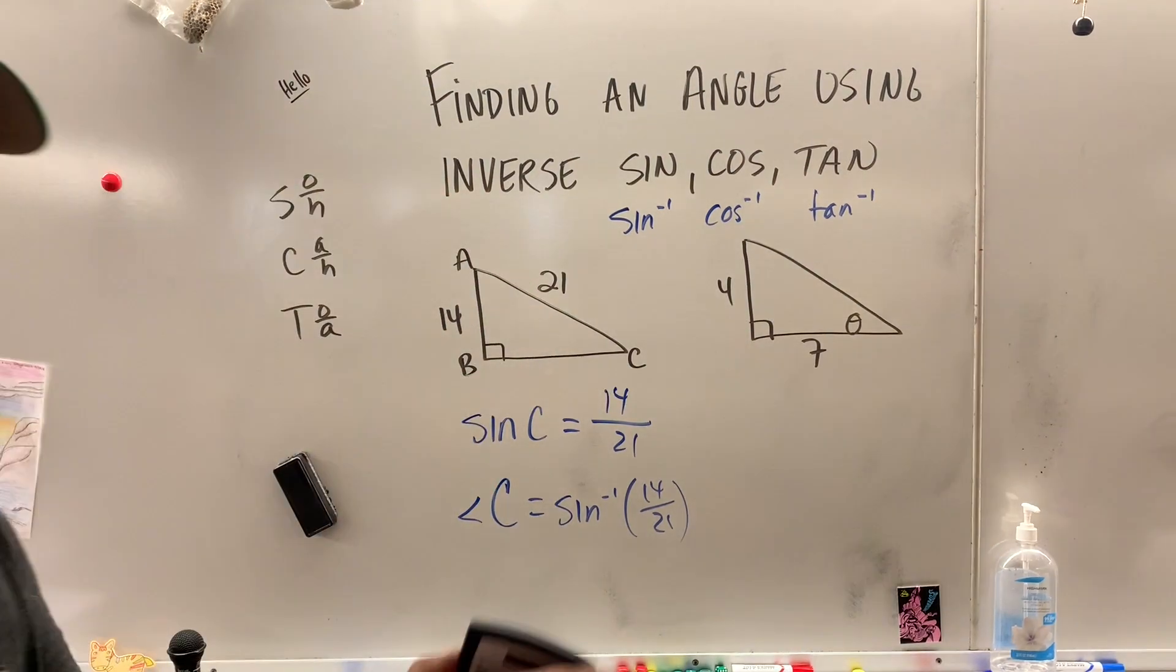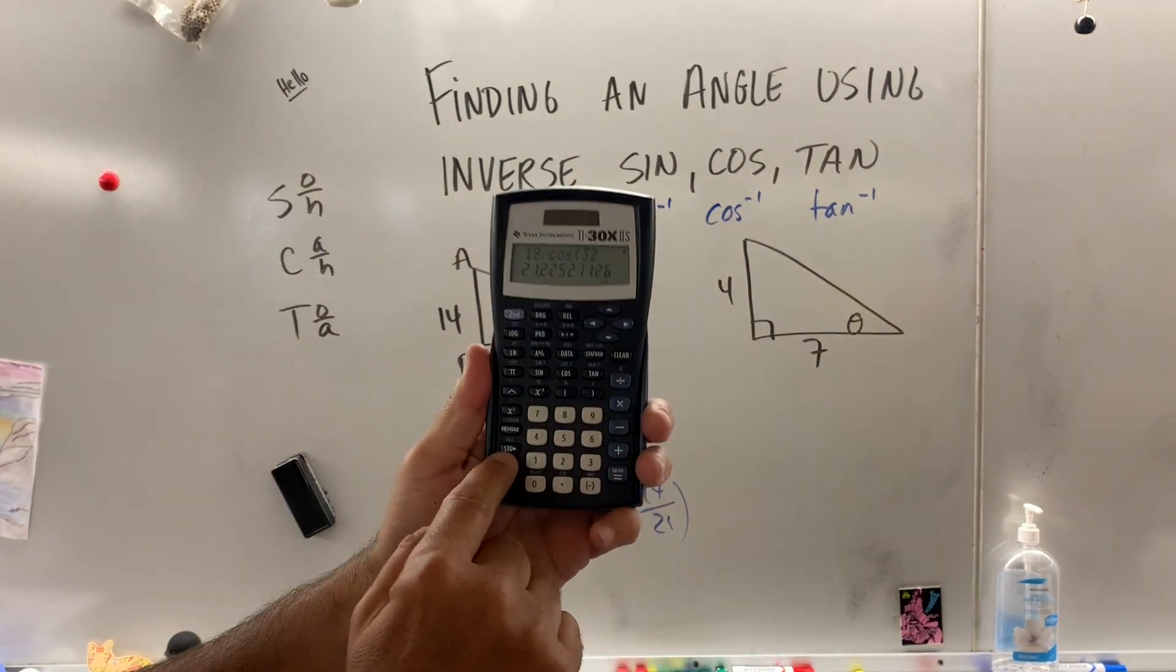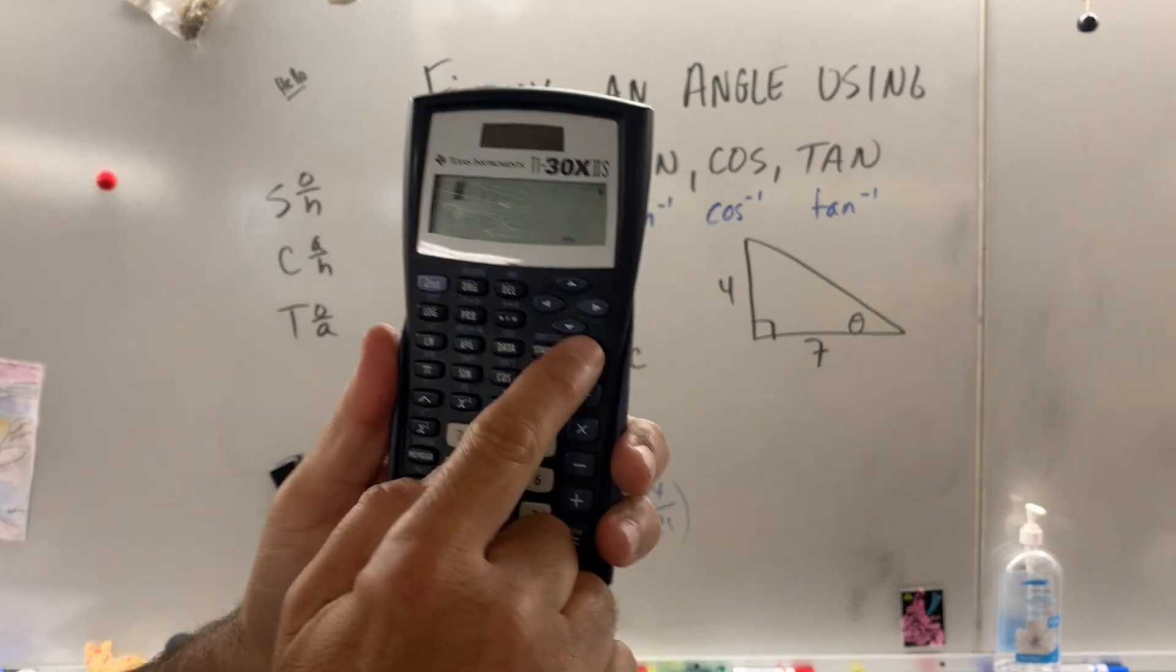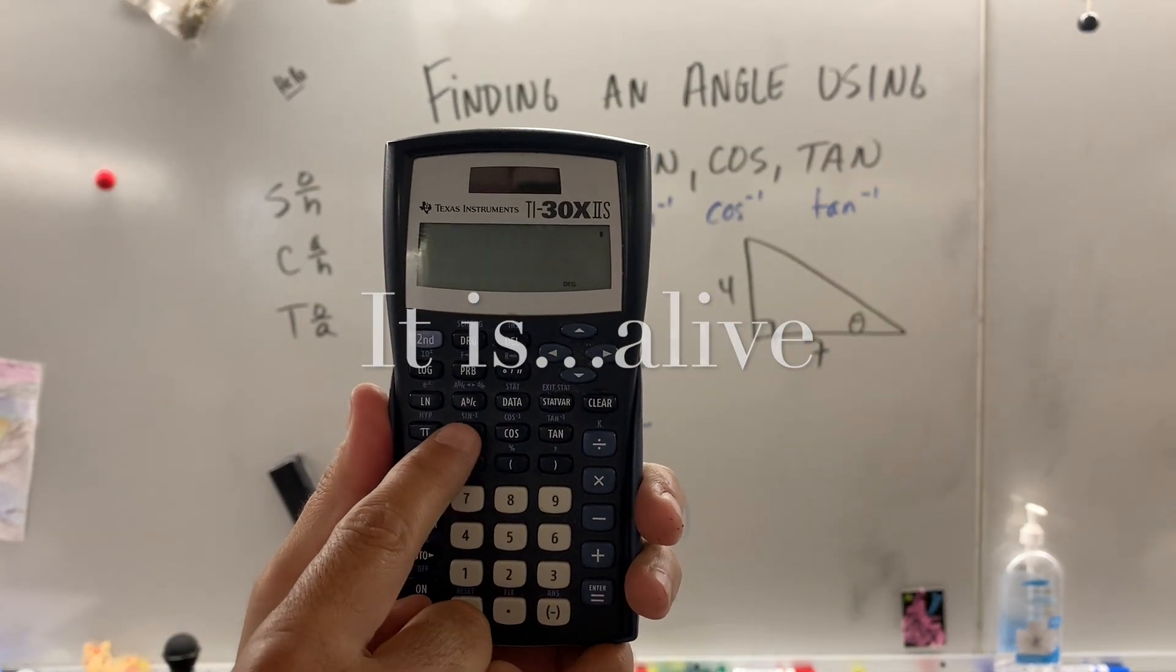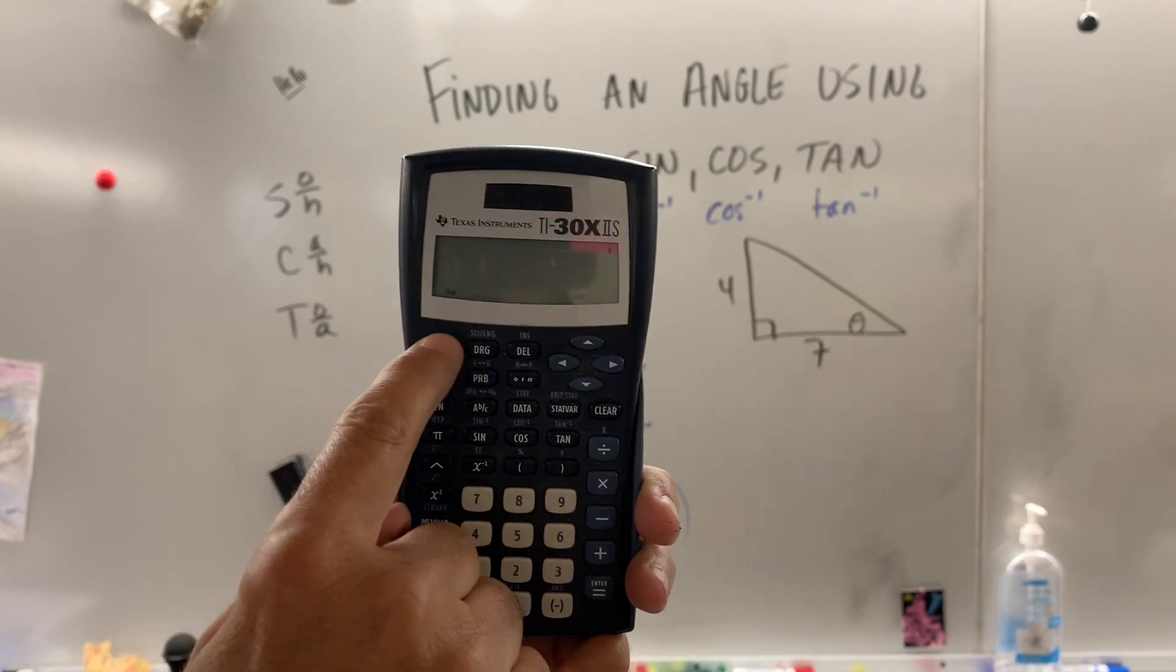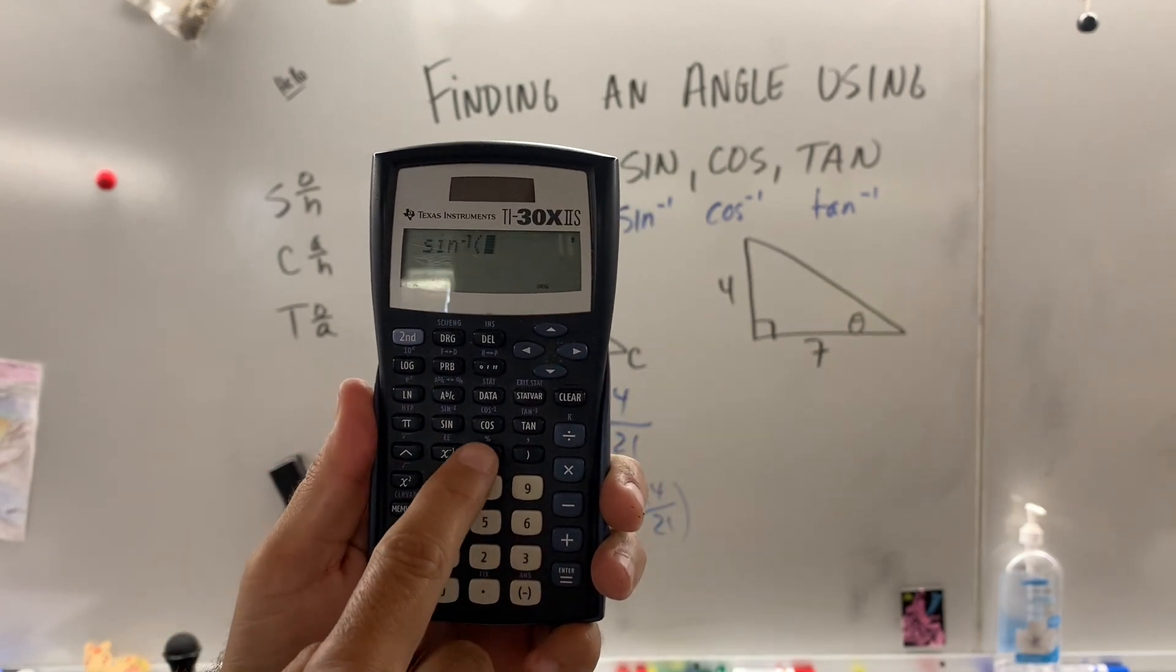So, on the calculator, we've got to turn it on, get a pulse. Is it breathing? Yep. So do you see how inverse sine is in blue? So you got to hit inverse sine, parentheses.